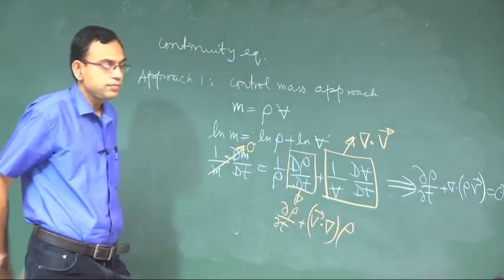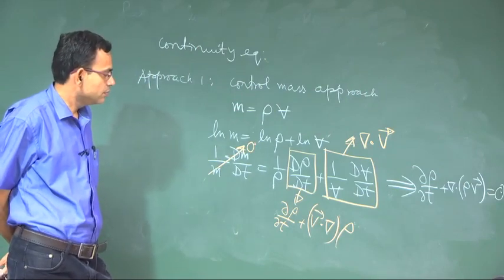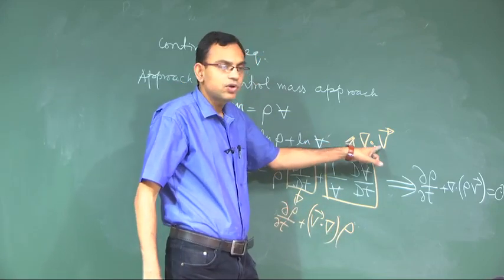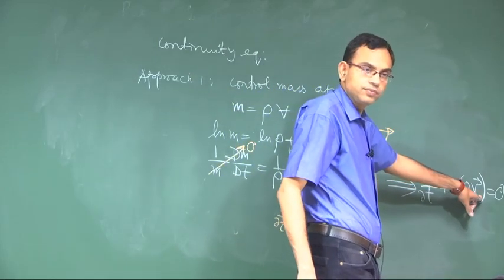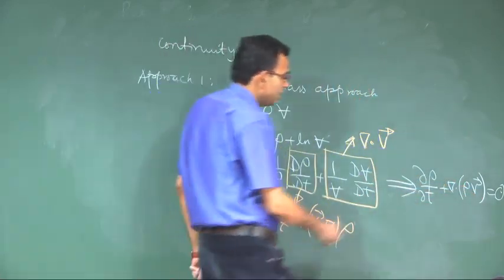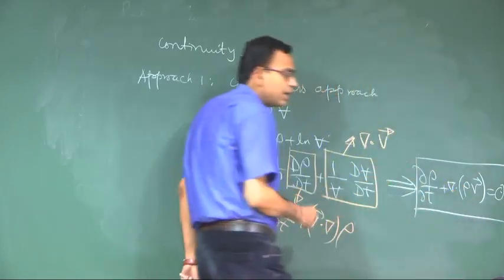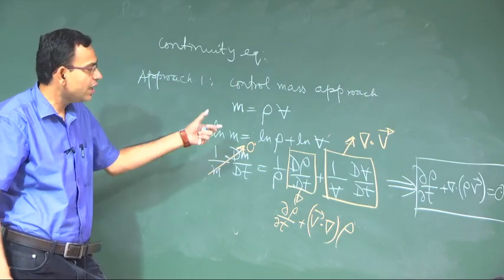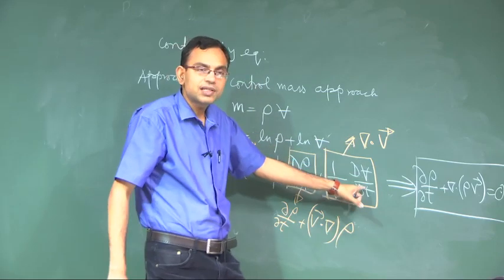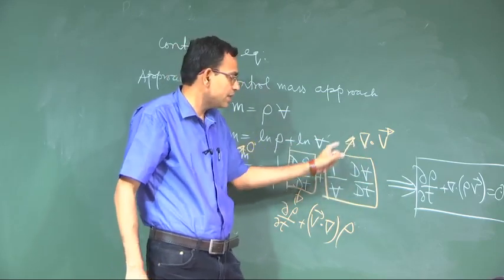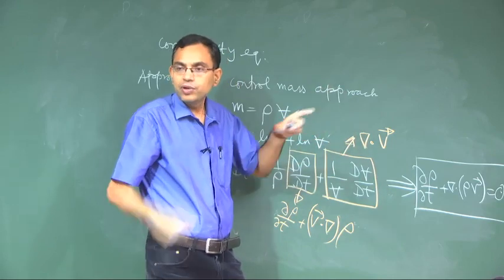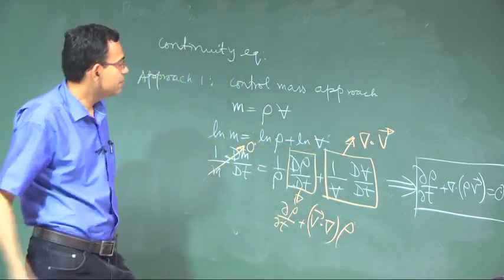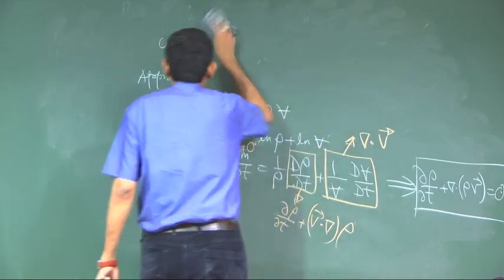This yields: v dot nabla rho plus rho times nabla dot v, which equals nabla dot (rho v). This is the general form of the continuity equation in vector form. We see how, from volume deformation considerations and using the total derivative notation, we can quickly arrive at the mass conservation equation.